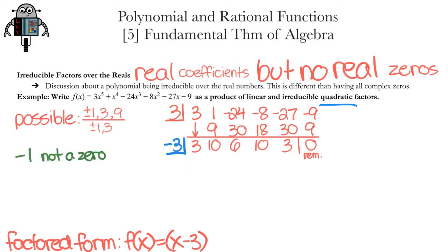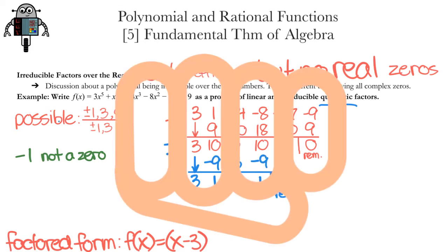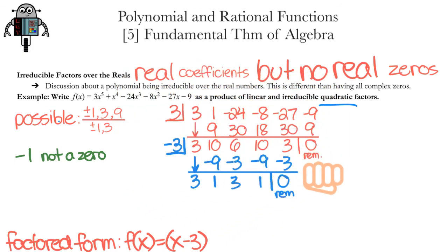Let's try negative 3 then. Negative 3 goes in the box, draw a horizontal line, drop down the first coefficient, multiply to get negative 9, add to 1, multiply to negative 3, and so on. The remainder is 0. Great, it works! Negative 3 is a zero, and x + 3 is a factor of the polynomial.